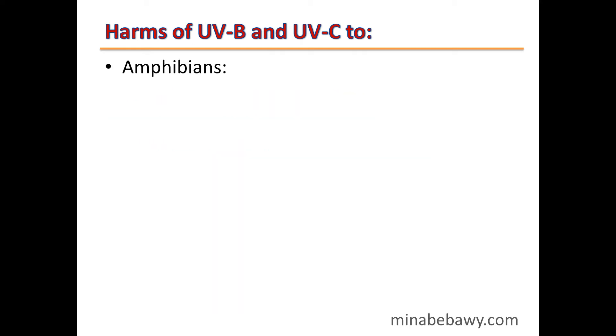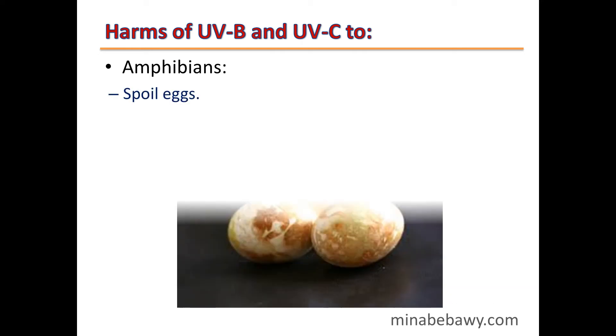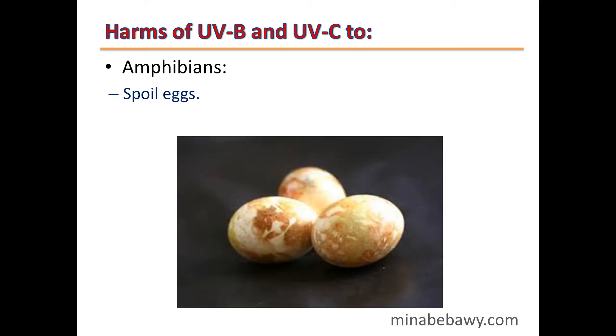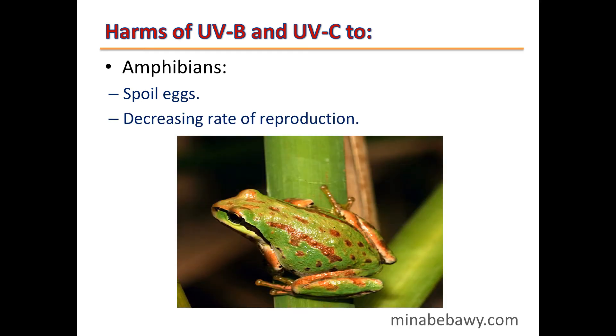Harms of UVB and UVC to amphibians: they cause spoiled eggs and a decrease in the rate of reproduction.